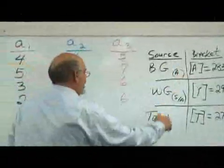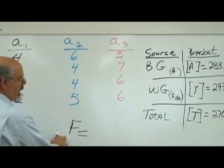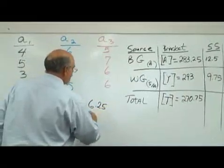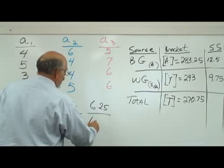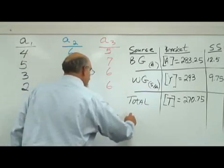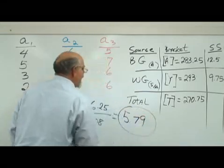So your F is, your F statistic is going to be 6.25, that's your between group, divided by your within group, 1.08. You divide that out, it looks like you get 5.79. That is your F statistic.